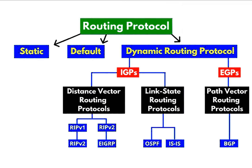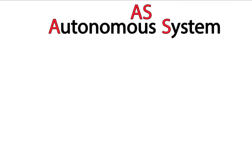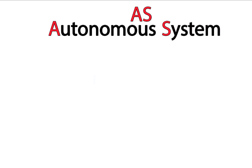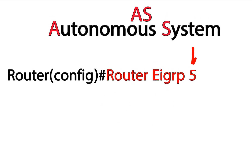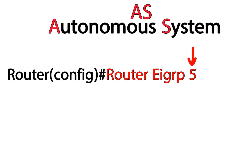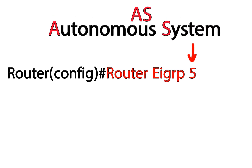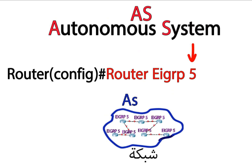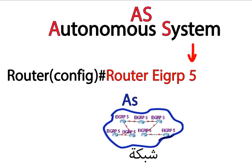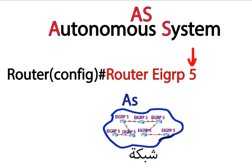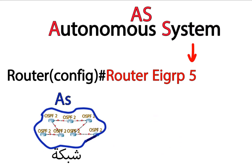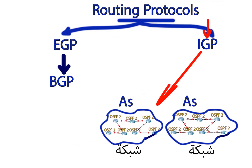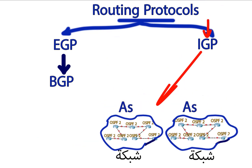What is the difference between IGP and BGP? First, let's understand what an autonomous system is. When configuring a routing protocol, you write a number next to the protocol — for example, EIGRP 5, where 5 is the autonomous system ID. If the whole network runs on one autonomous system, all routers use the same ID, like EIGRP 5 or OSPF 2. IGP protocols work within the same autonomous system.